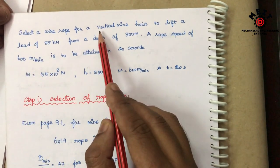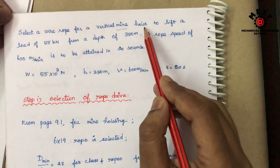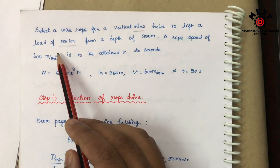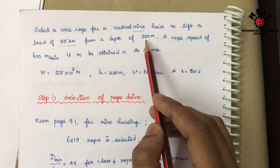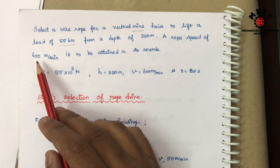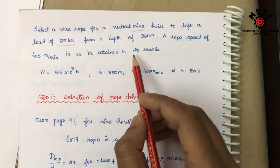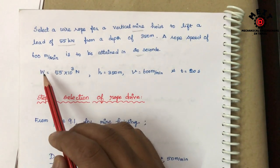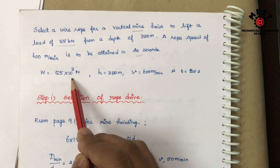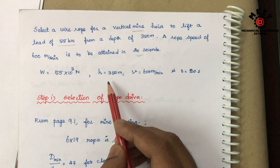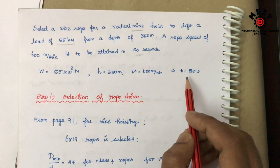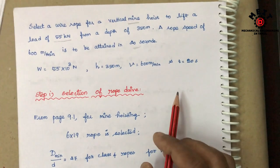Select a wire rope for vertical mine hoisting. Load value is 55 kN, with a depth of 350 meters. Rope speed is 600 meters per minute, to be attained in 20 seconds. So load to be lifted W is equal to 55 × 10³ N, height to be lifted is 350 meters, rope speed is 600 meters per minute, attained in 20 seconds.